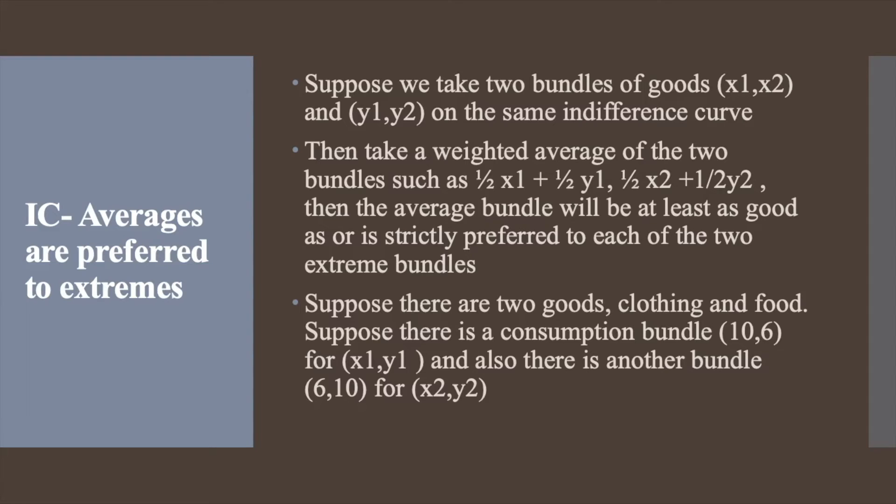Then if we take the average of the two bundles, we will get (10 + 6)/2, (6 + 10)/2 which is (8, 8), that is 8 units of food and 8 units of clothing.